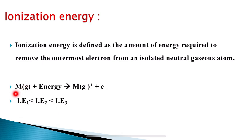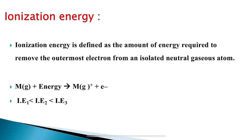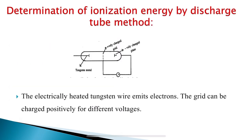A gaseous metal atom, when it combines with energy, is going to lose an electron. The electron has been liberated or separated out, and how much energy is required for this purpose is called ionization energy.